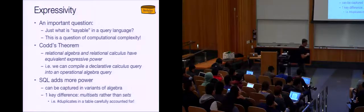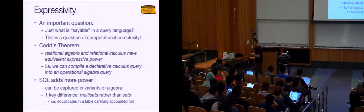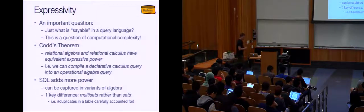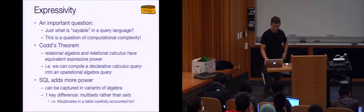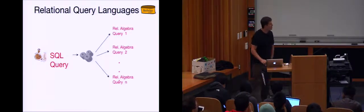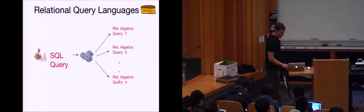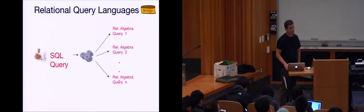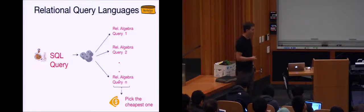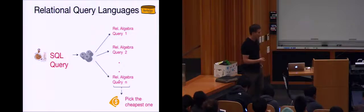One key difference we'll see today: SQL by default deals with multi-sets of records rather than sets, so each record can appear more than once in a relation. That's going to be lurking in the background. Typically you sit down and write an SQL query; the query optimizer generates potentially many relational algebra expressions — query plans — that could execute that query, all equivalent. The goal of the optimizer is to pick the cheapest one. You don't have to think about which execution strategy is best.